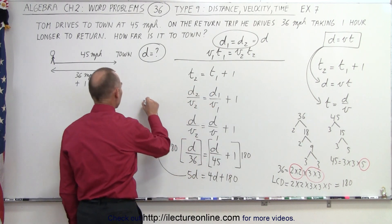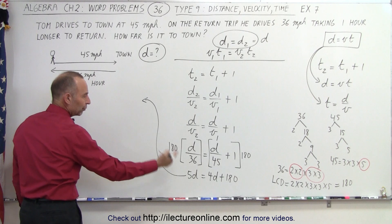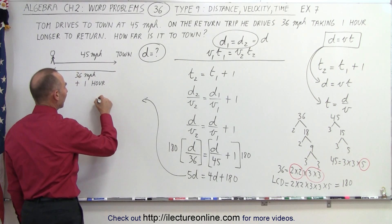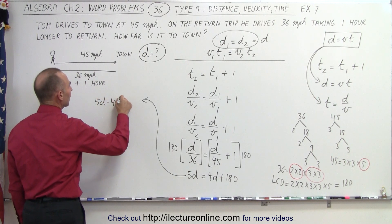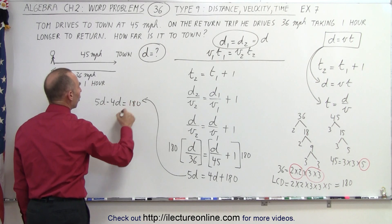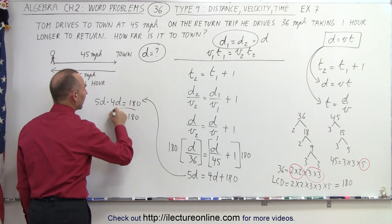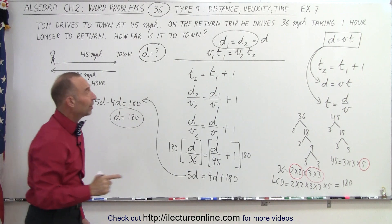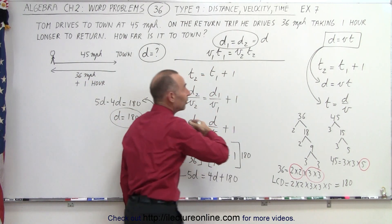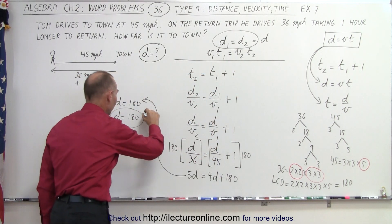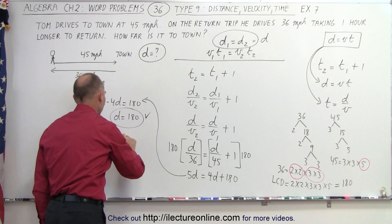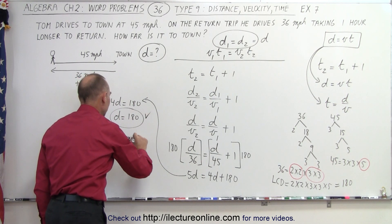Coming over here to continue the problem, I move the 4D to the left side, so I have 5D minus 4D is equal to 180, or D equals 180. And the distance is equal to distance 1 and distance 2, the distance to get to town, and so it means that the distance is 180 miles.